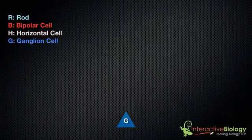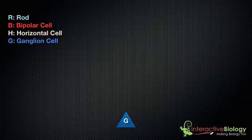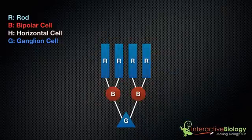I have a ledger over here that shows that R stands for rods, B stands for bipolar cell, H stands for horizontal cell, and G stands for ganglion cells. Here I'm starting with a ganglion cell, and we've looked at the way rods connect to ganglion cells via bipolar cells, so I'm going to show that right now.